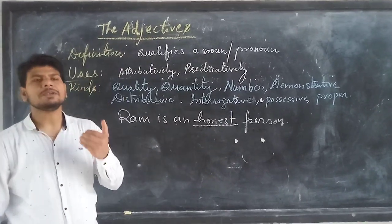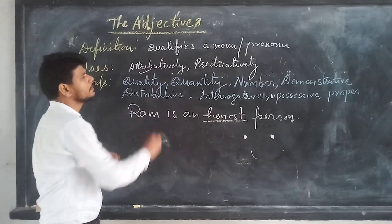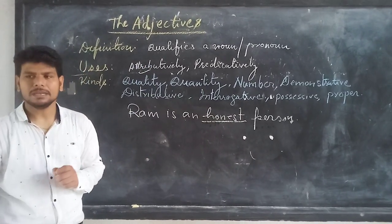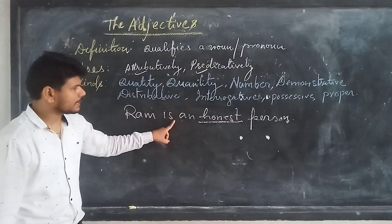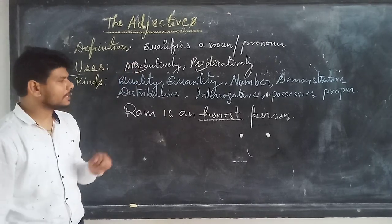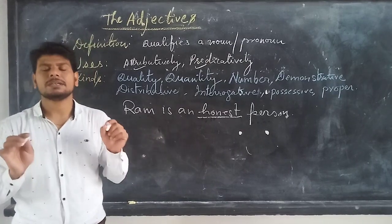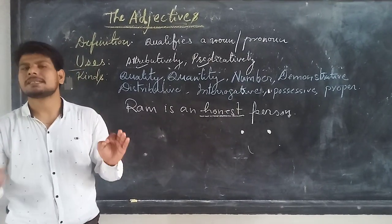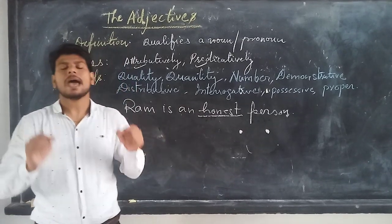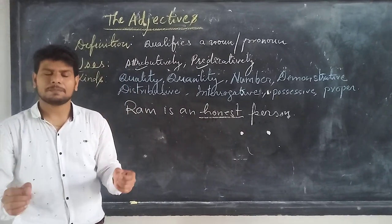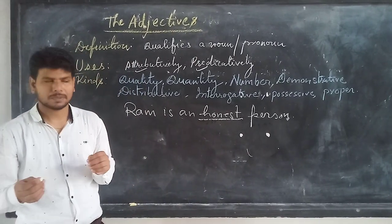An adjective can be used in two different ways. Firstly, it could be used attributively, and secondly, predicatively. When an adjective is used in front of a noun, it is called attributive use, because it talks about the quality or attribute of an object, person, or theme.